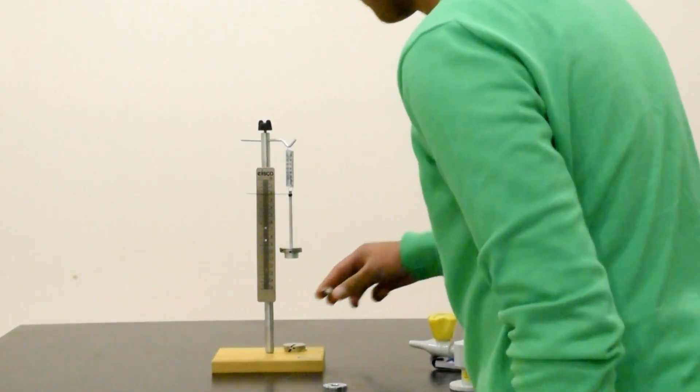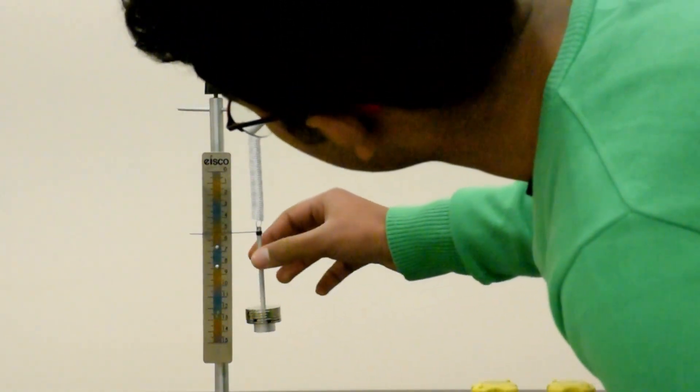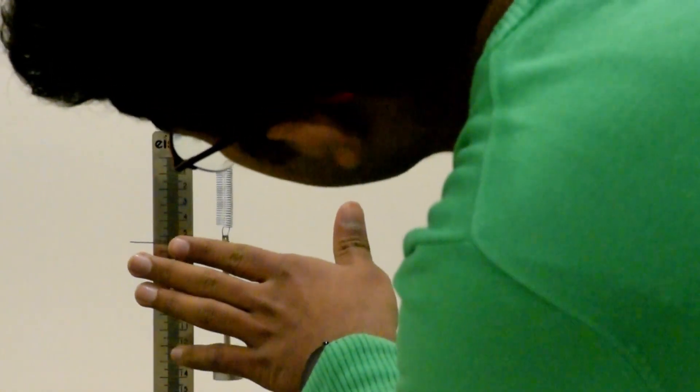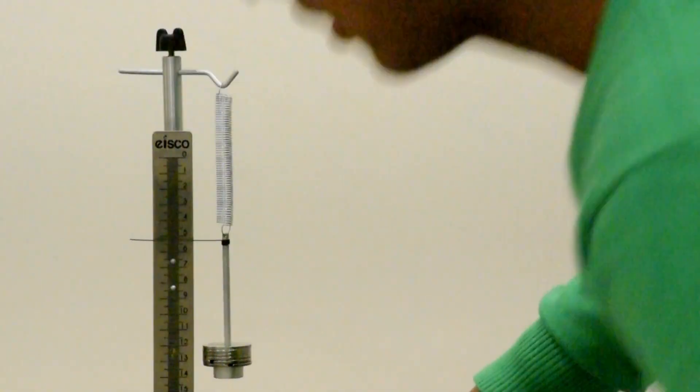Now let's have a look at 0.6. Now for 0.6 newtons, I have an extension of 5.3 centimeters.